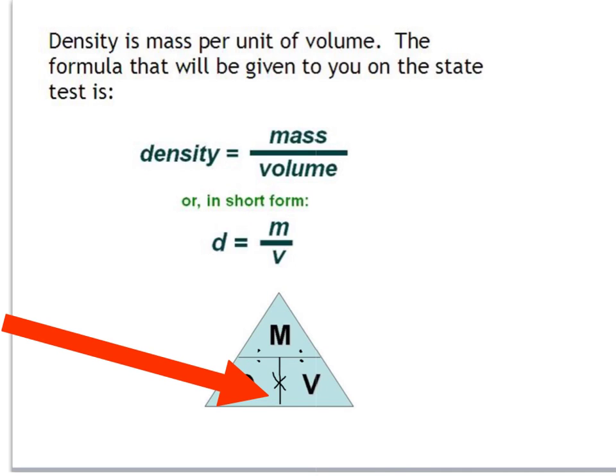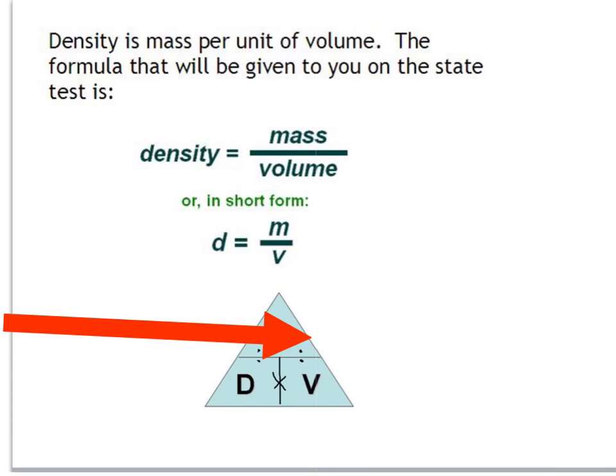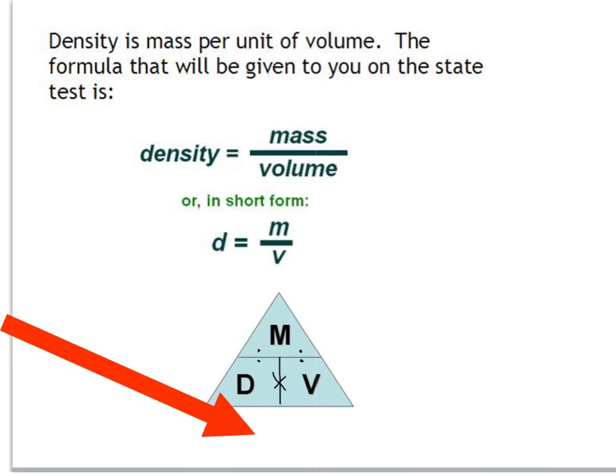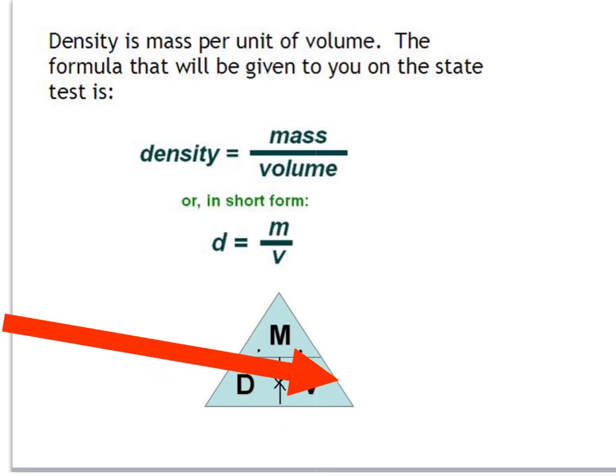Now what if they wanted you to figure out what the mass was? Well, just cover up the mass and you'll see density times volume. And what if they want you to figure out what the volume was? You'd cover up the V, and that would reveal to you that it was going to be mass divided by density. And that's how you're going to end up using this density triangle.